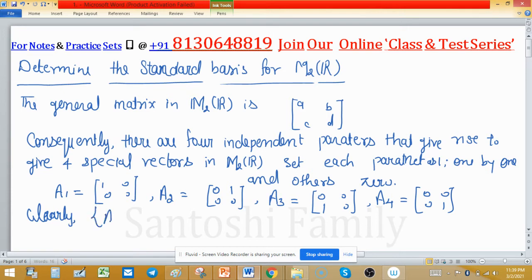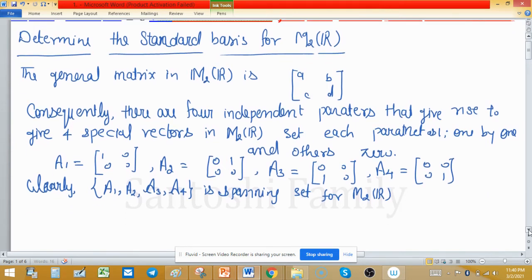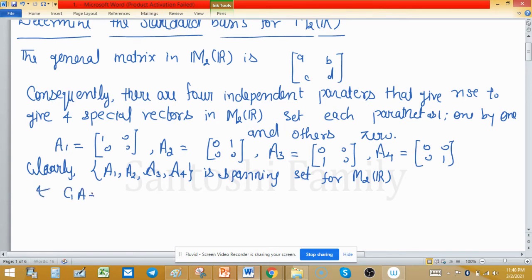Clearly, the set {A₁, A₂, A₃, A₄} is a spanning set for M₂(R). We have C₁A₁ + C₂A₂ + C₃A₃ + C₄A₄ = 0 if and only if all Cᵢ = 0 for all i.